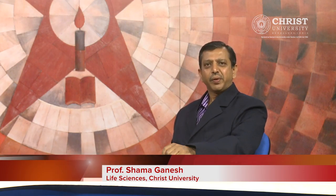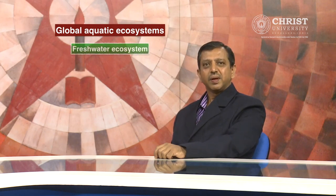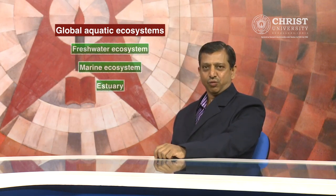Hello and welcome. In today's lecture we shall take a look at the Aquatic Ecosystem. There are many types of aquatic ecosystems ranging from small temporary puddles to large oceans. They differ widely with regard to abiotic factors and living organisms. Global aquatic ecosystems can be classified broadly based on salinity as freshwater ecosystem, marine ecosystem and estuary.